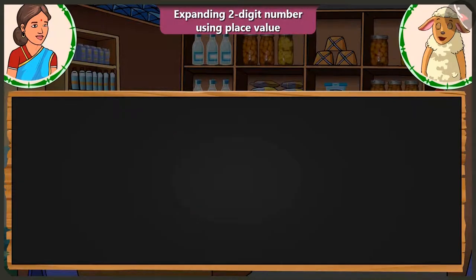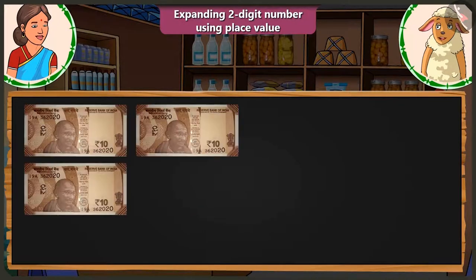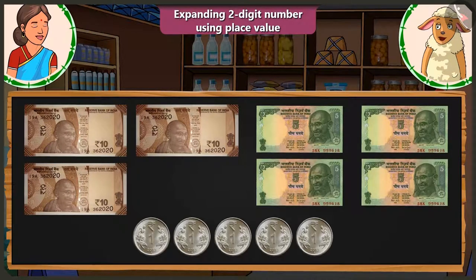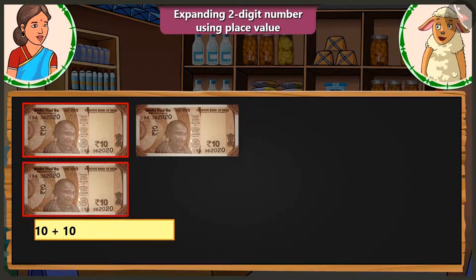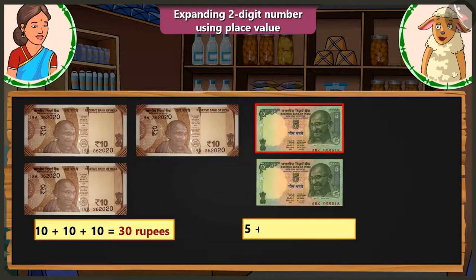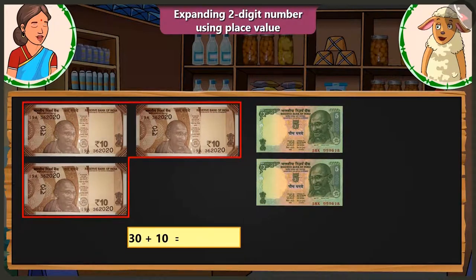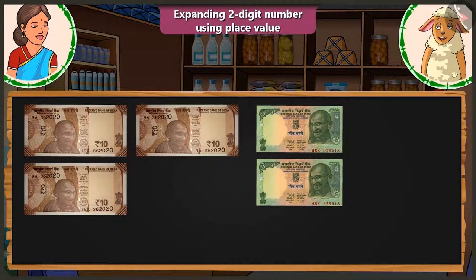But I have only 3 notes of 10 and 4 notes of 5 and the remaining coins. Don't worry, Lily. There are 1, 2 and 3 notes of rupees 10. Adding them makes it 30 rupees. Now adding this 5 and 5 makes 10. And adding 10 to this 30 makes 40. Means I don't have to go looking for 10 rupee notes every time.